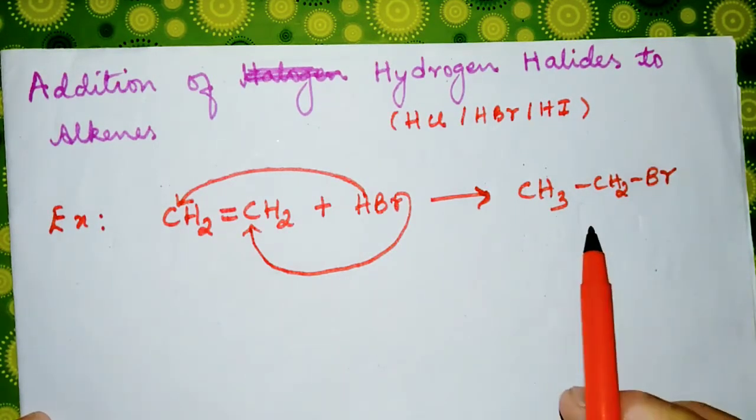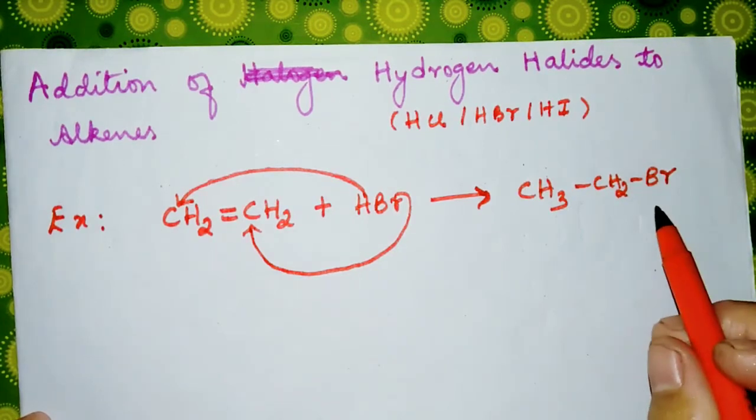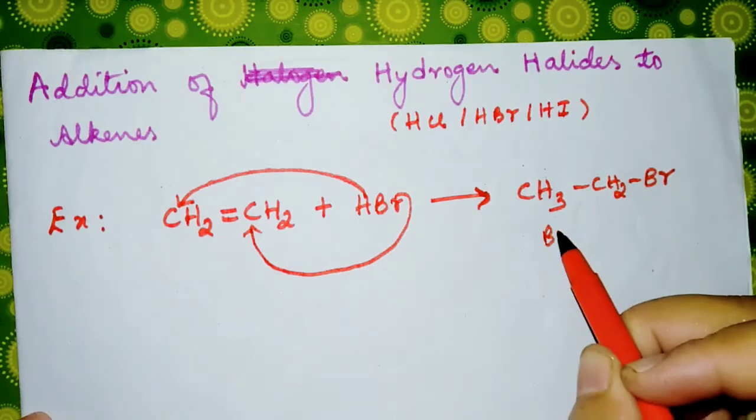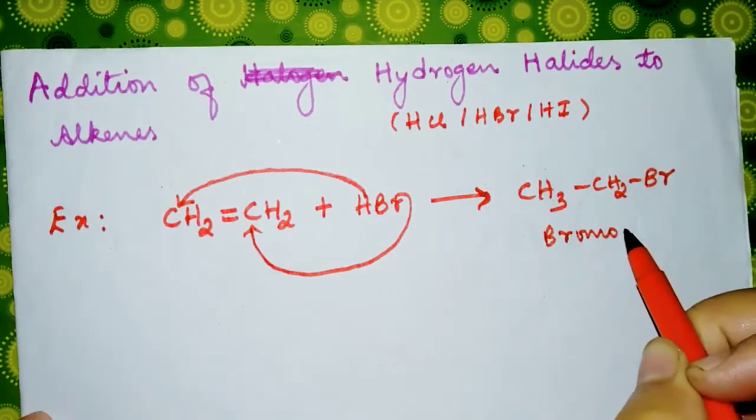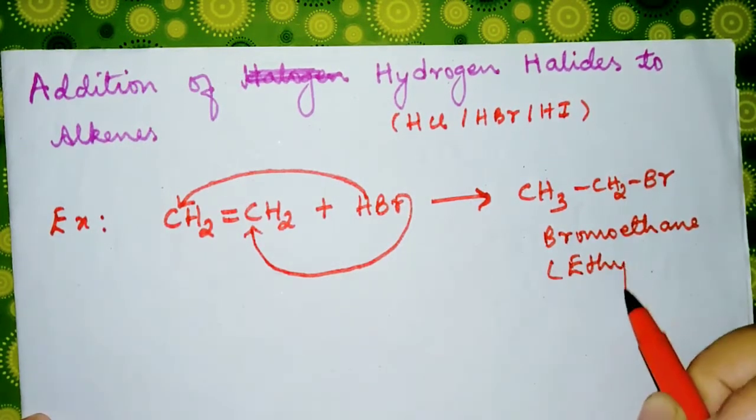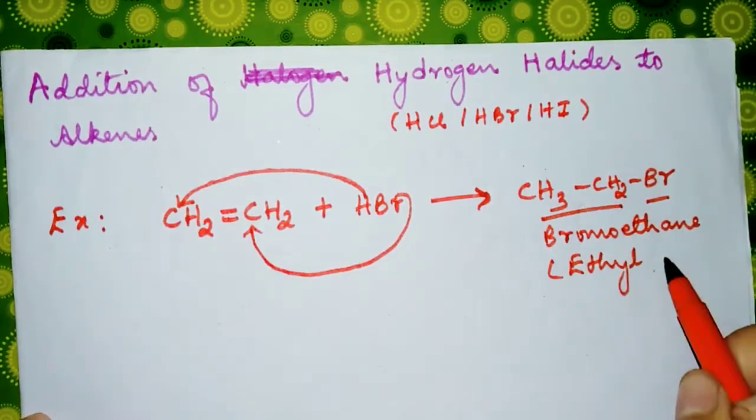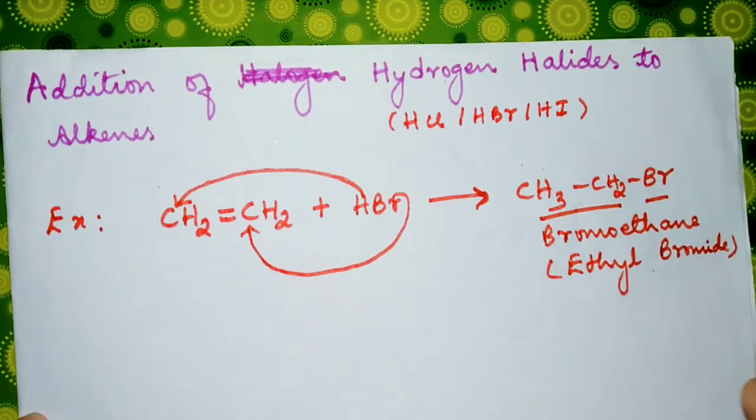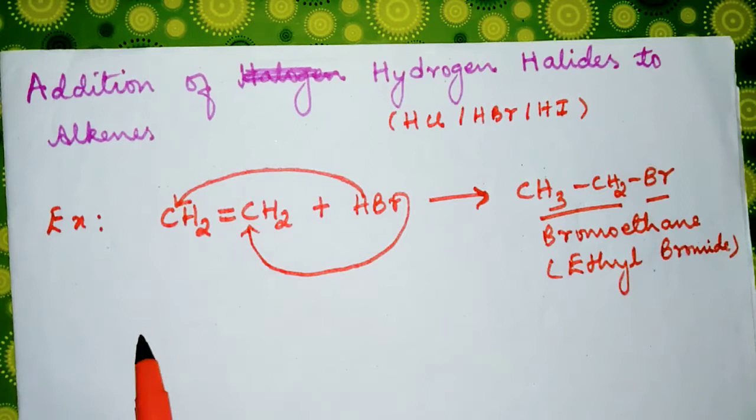Whenever alkenes react with hydrogen halides we get alkyl halides. The name of this one is bromoethane or ethyl bromide. Let's have another example.